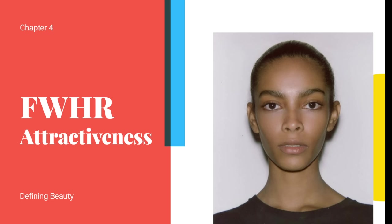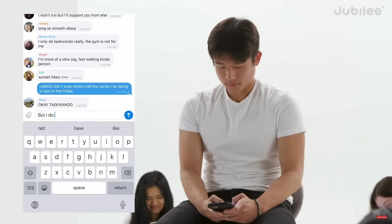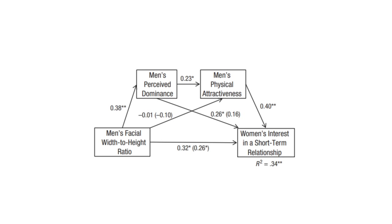How does FWHR play into facial attractiveness? Valentine et al studied the role of the ratio in regards to dominance and mate choice at speed dating events. Speed dating studies are useful because they are the closest thing a scientist can get to replicating real world events. Men's FWHR was seen as more dominant, as expected, and gave the men a better chance of a second date and was more attractive to women in short term relationships, but not long term relationships.